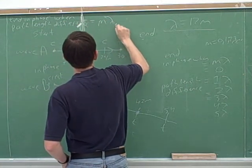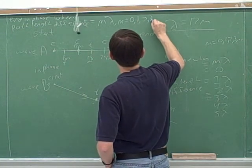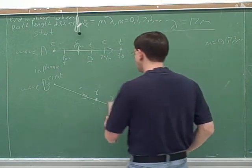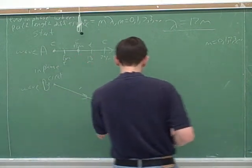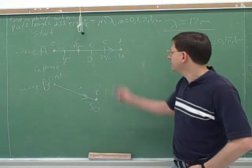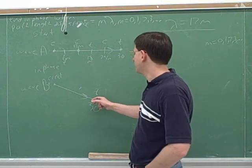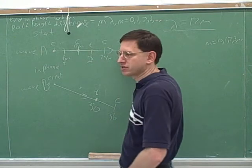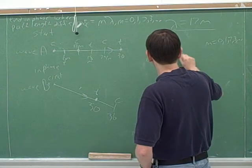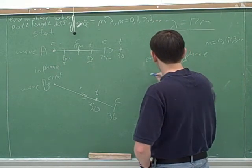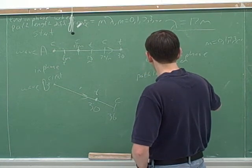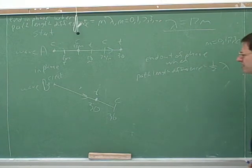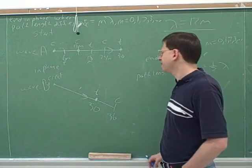When the path length difference is M lambda and M is any whole number of 0 or above, the waves end in phase. Now let's think about when they're out of phase — 180 degrees out of phase. If they both went the same distance they would be in phase, so how far should we let wave B go so that it will end out of phase with wave A? The path length difference would be half a wavelength. If one of them has traveled half a wavelength longer than the other, then it makes sense that they're half a cycle out of phase.